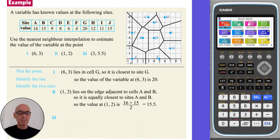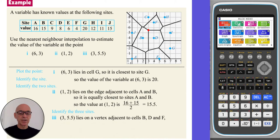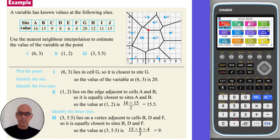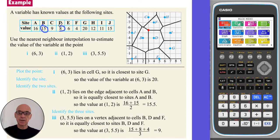In part 3, plotting the point (3, 5.5), we see that the point lies on a vertex adjacent to cells B, D and F, so it is equally closest to these three sites. To estimate the value of the variable at this point, we find the average of 15, 8 and 4, giving a value of 9, as shown.